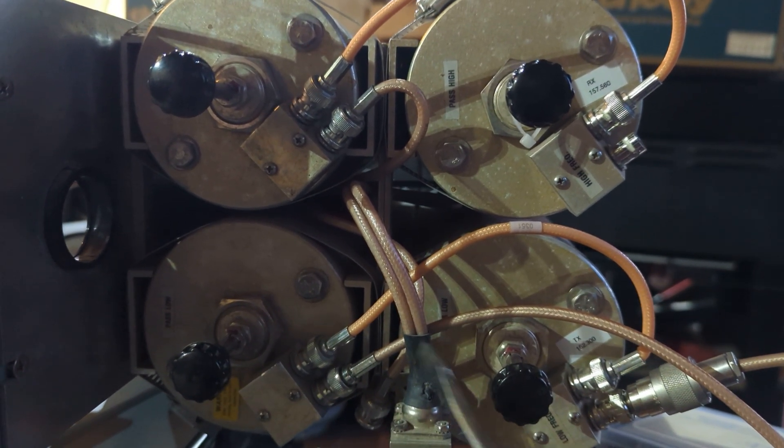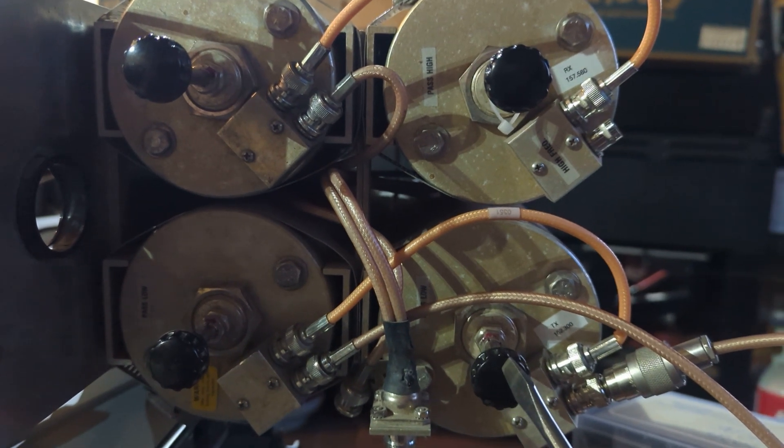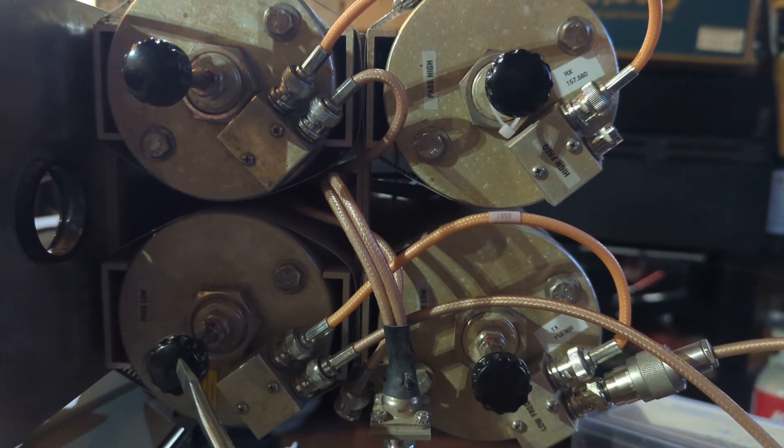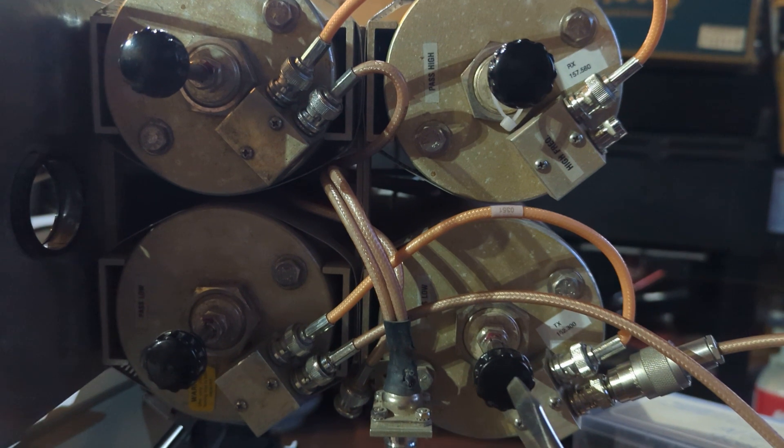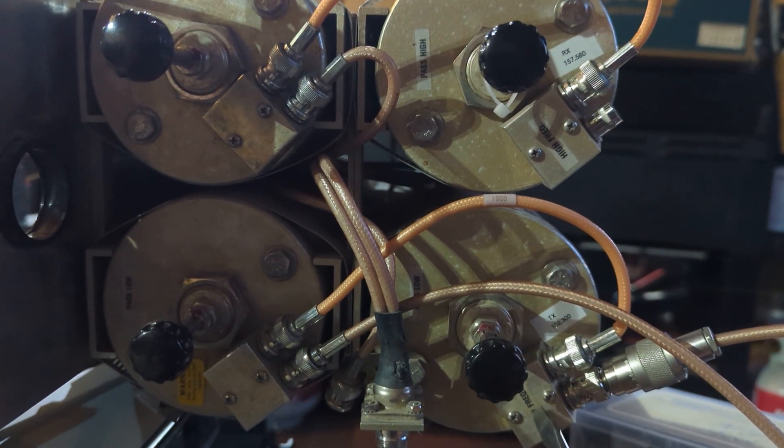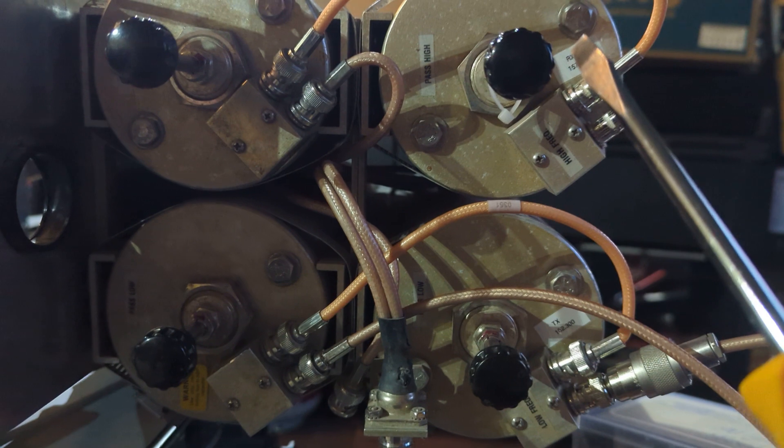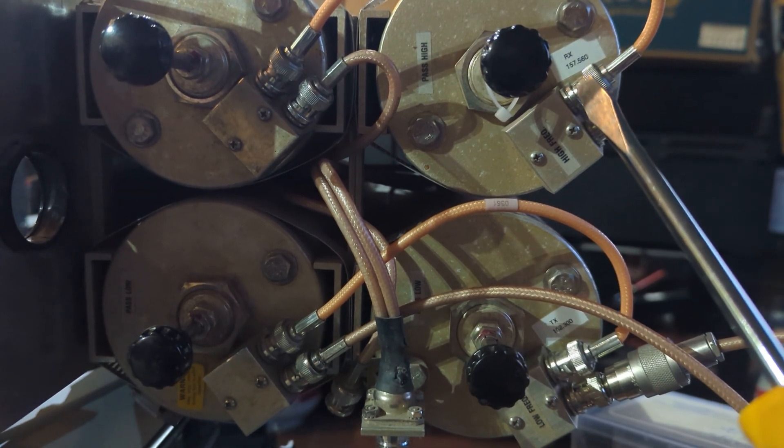And then what's going to happen is these down here are going to notch out the opposite frequency. So in other words, on this side here, which happens to be on my transmit side, it's going to go ahead and pass 152300. But these two little things here are going to go ahead and notch out the receive of 157560.